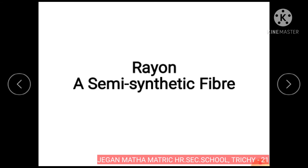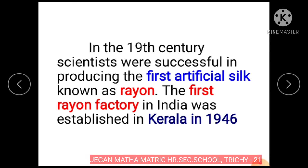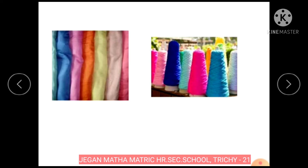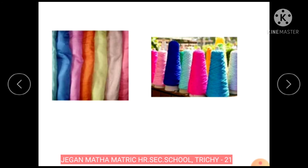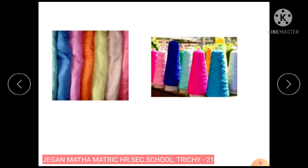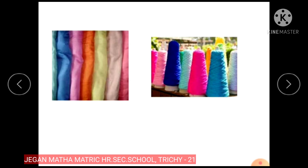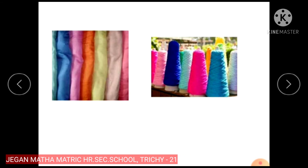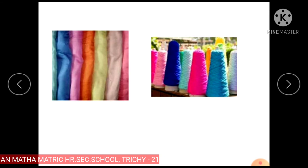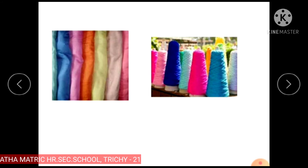Rayon is a semi-synthetic fiber. In the 19th century, scientists were successful in producing the first artificial silk known as rayon. The first rayon factory in India was established in 1946. Rayon is a man-made fiber but it is not considered fully synthetic as it is made out of natural cellulose collected from wood pulp.